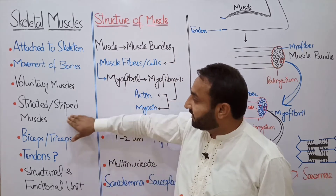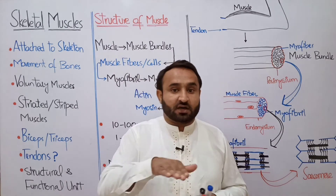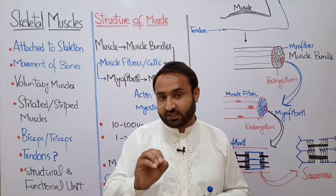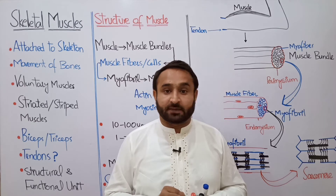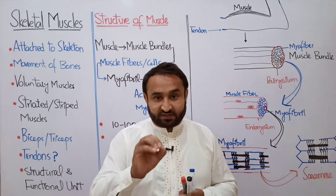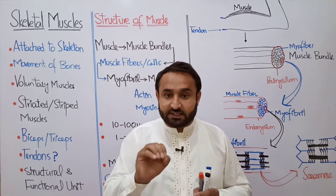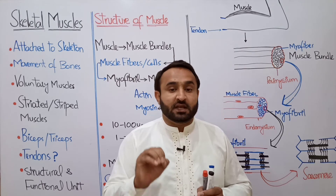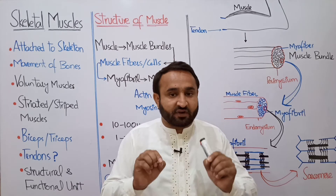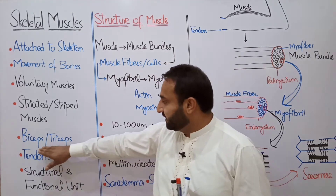Skeletal muscles are also called striated or striped muscles. These are voluntary muscles — we can consciously control them. Striations are regular, evenly present at equal distances. When we say striated muscles in biology, we mean the skeletal muscles.